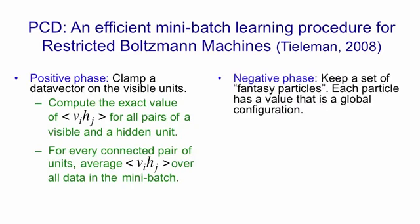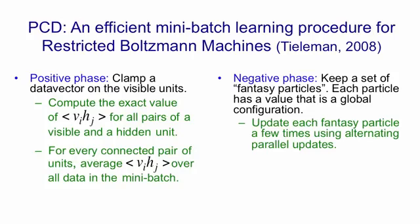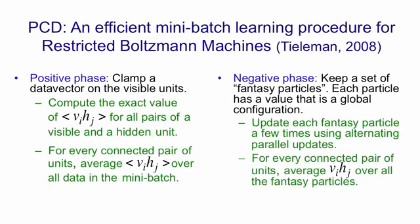For the negative phase, you keep a set of fantasy particles, that is, global configurations. And then you update each fantasy particle a few times by using alternating parallel updates. So after each weight update, you update the fantasy particles a little bit, and that should bring them back to close to equilibrium. And then for every connected pair of units, you average VIHJ over all the fantasy particles, and that gives you your negative statistics. This algorithm actually works very well, and allows RBMs to build good density models of sets of binary vectors.